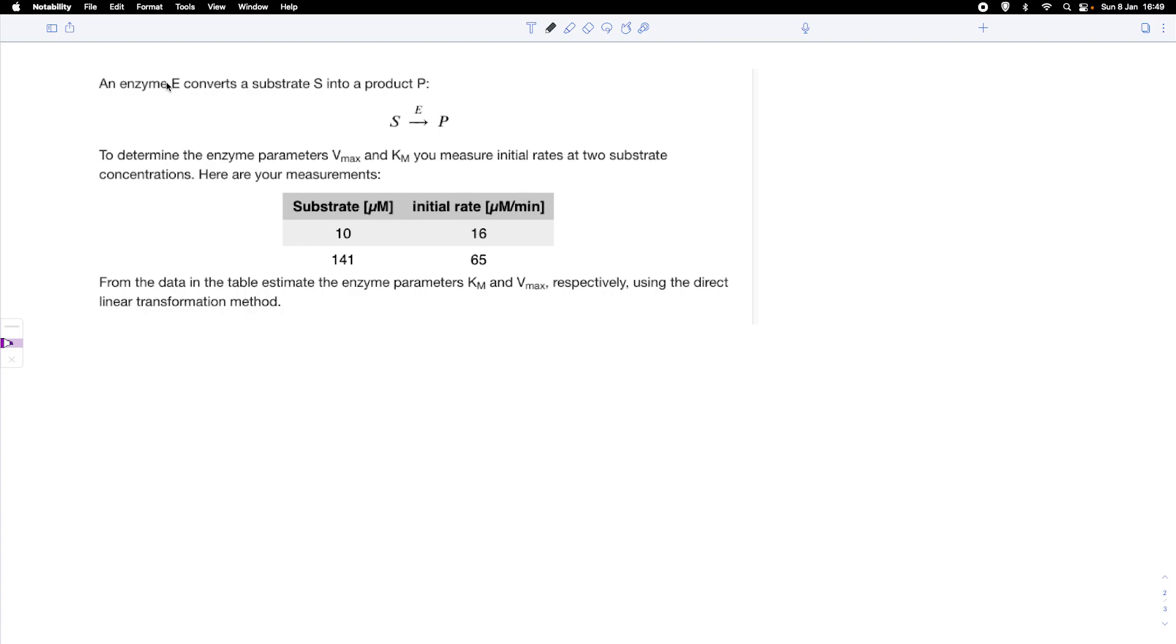In this example, we have an enzyme E that converts a substrate into a product. We want to figure out the enzyme parameters, namely Vmax and Km, for this enzyme reaction. We would usually use a set of experiments where we have different substrate concentrations and measure the corresponding initial rates. But in this experiment, we've only got two values - two substrate concentrations and we measure the initial rate that corresponds to this.